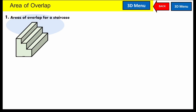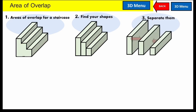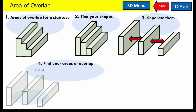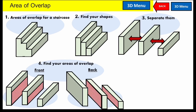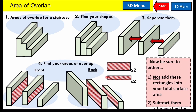Here is an area of overlap for a staircase. I'm going to separate these shapes and then expose the area of overlap. It's hard to visualize, so I have a front and back view, and you can see how this shape would have connected to this area of overlap and how this piece also has an area of overlap on the other side. You should see that there are two large rectangle pieces and two small rectangle pieces that are the area of overlap. Make sure that you either subtract those pieces or don't add them after you find each of these rectangular prisms and add them together.